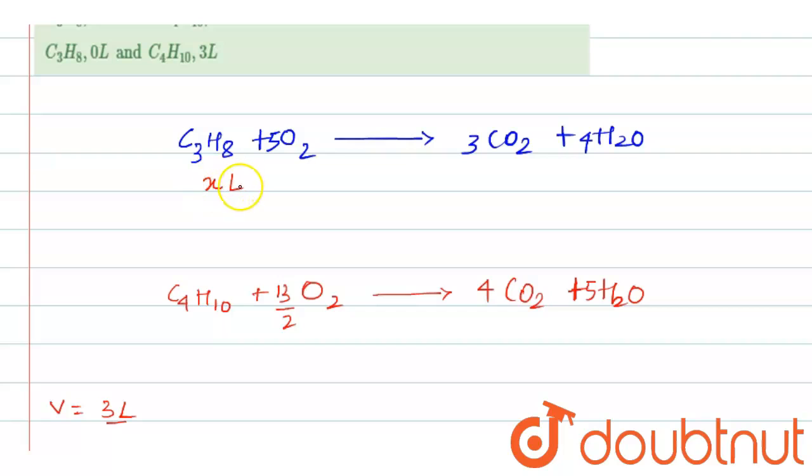When X liters of propane undergoes combustion, it will form how many liters of carbon dioxide? 3X liters.